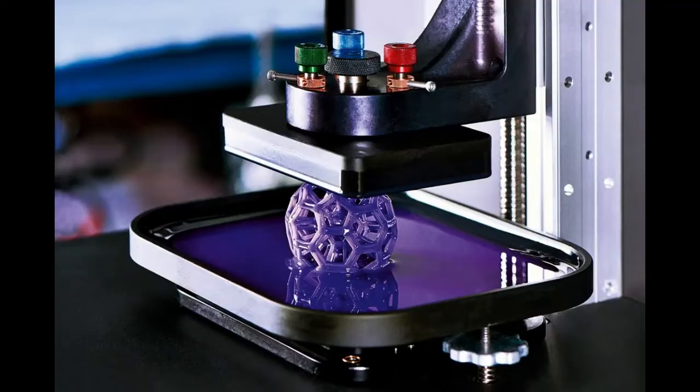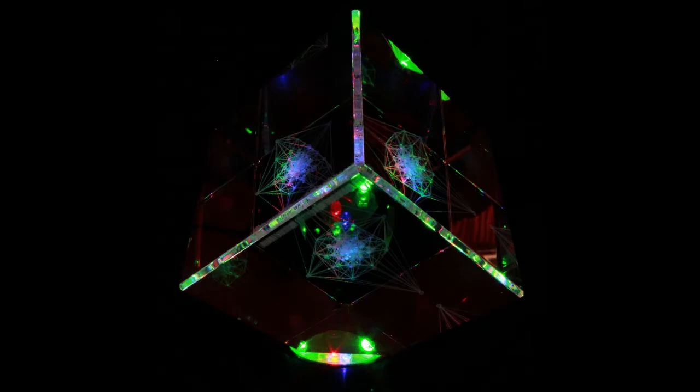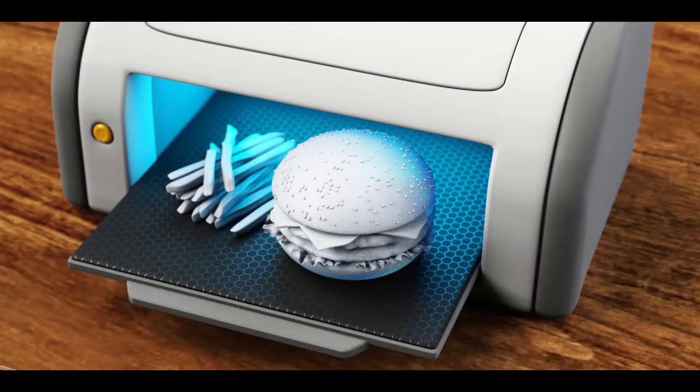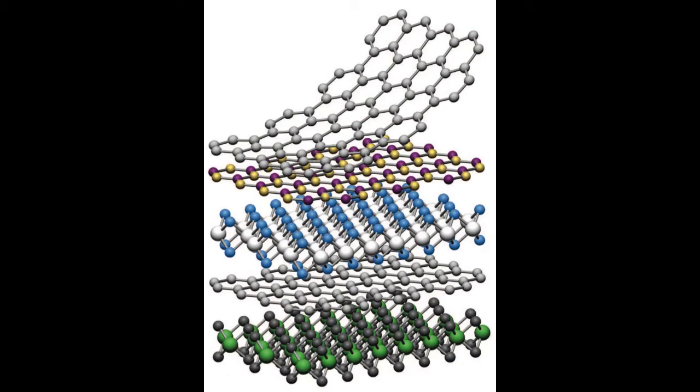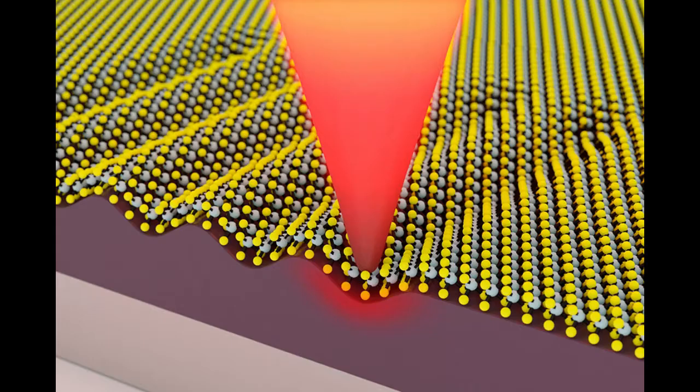So what is it? It's a process where a real three-dimensional object is being made from a digital 3D model. 3D printing uses a layer-laying method in which the printing object is created by putting several two-dimensional layers on each other, which are horizontal cross-sections of this printing object.